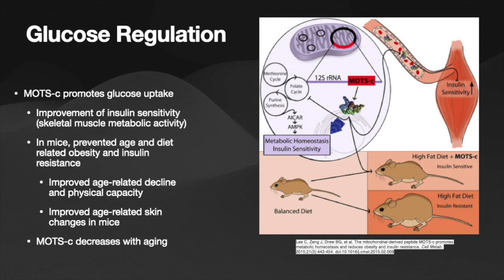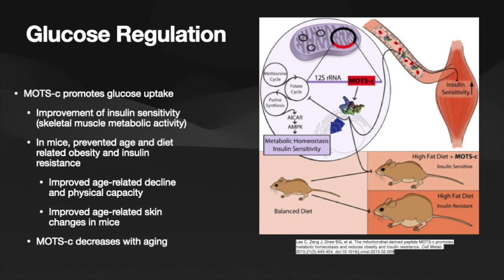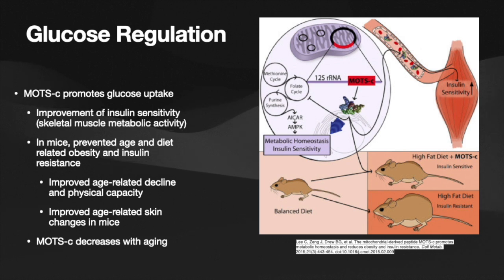This is a really cool picture — the study itself is cited below. I definitely recommend reading up on all these studies so you can better understand not only what I'm looking at, but also help yourself sift through the research. Take a mouse on a high-fat diet — insulin resistant. Add in MOTS-C — insulin sensitive. It's really cool how heavily a little peptide can interfere with the mechanics of metabolism.